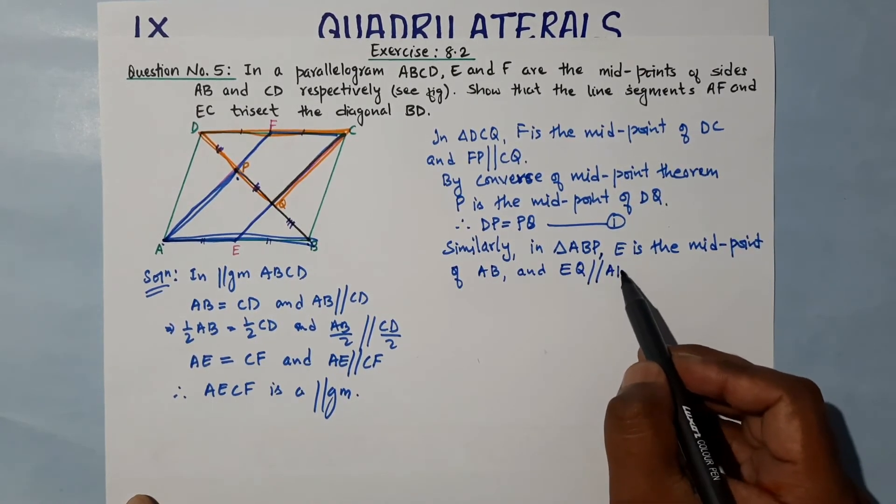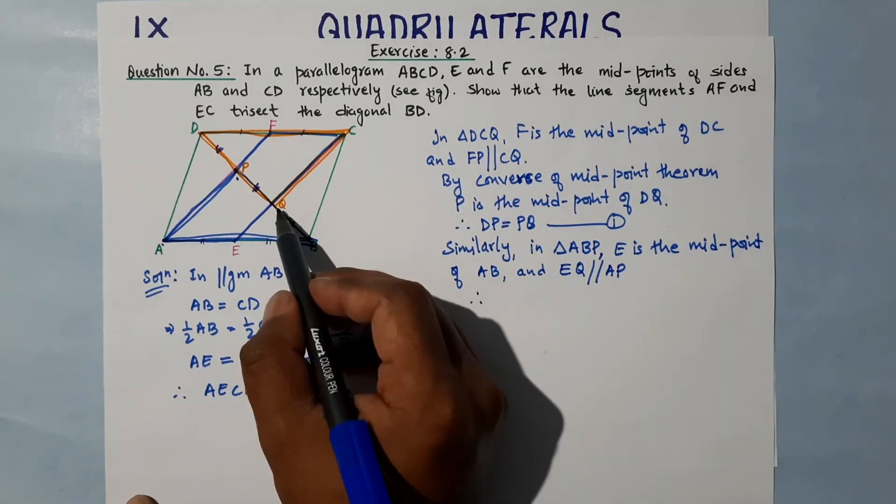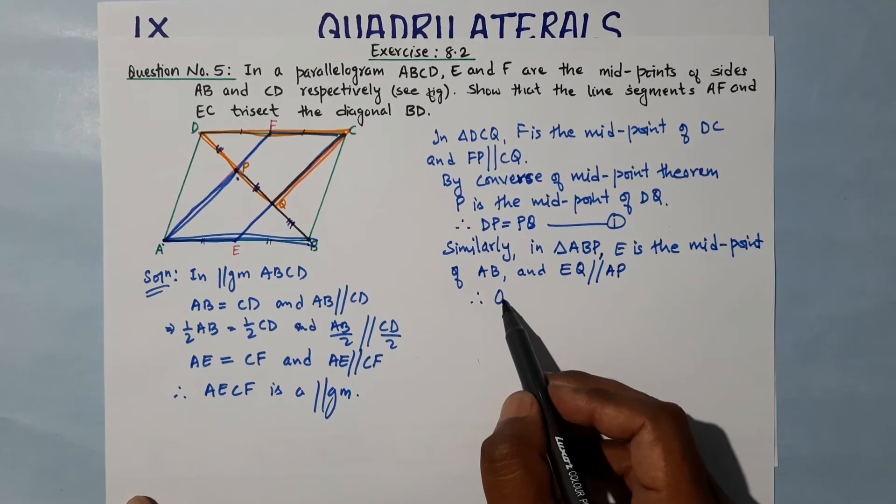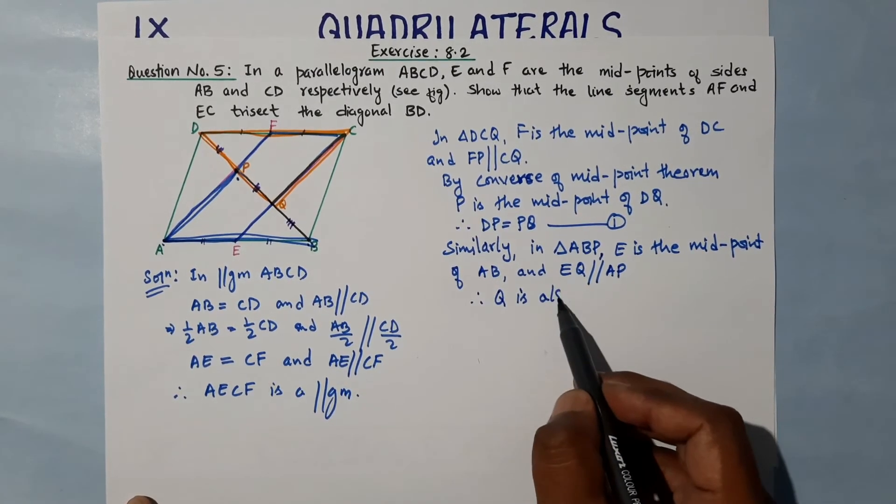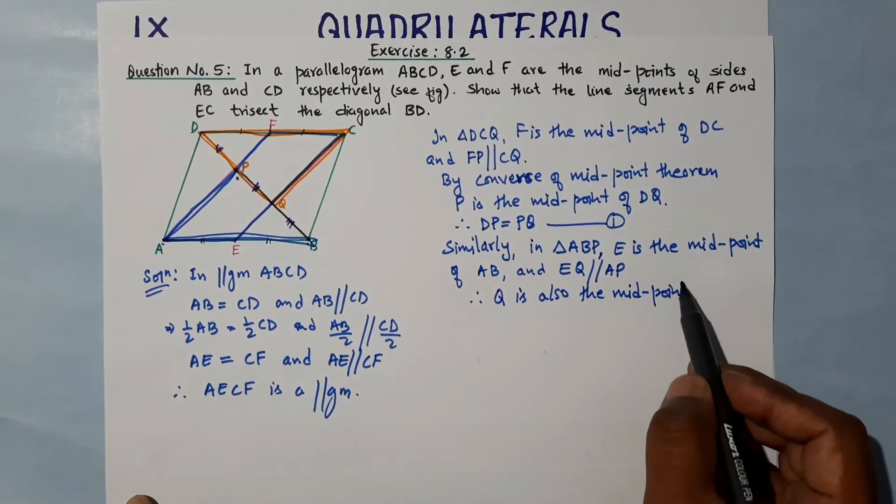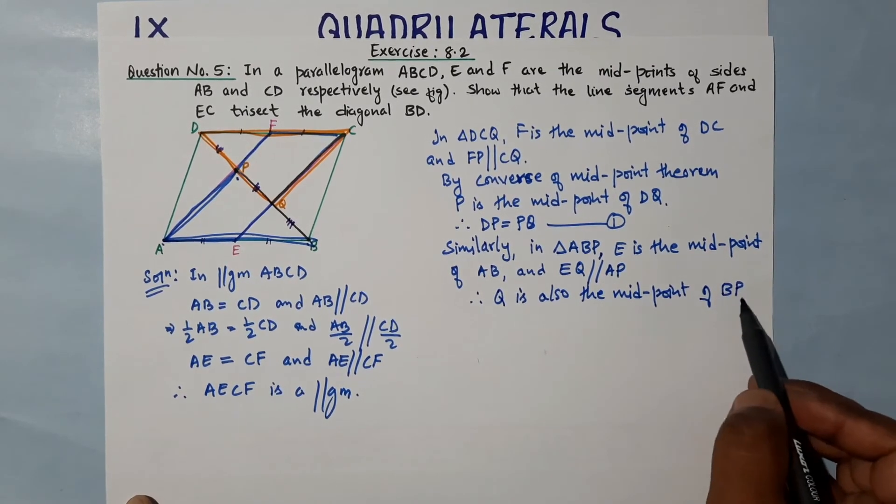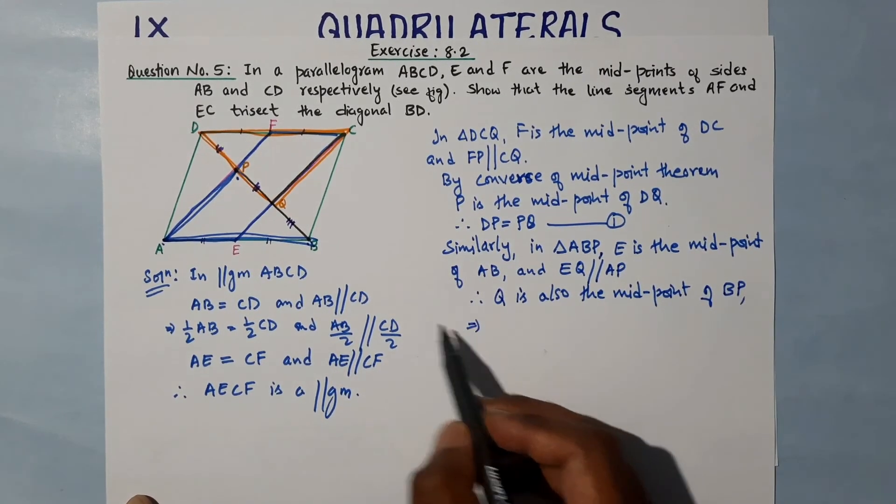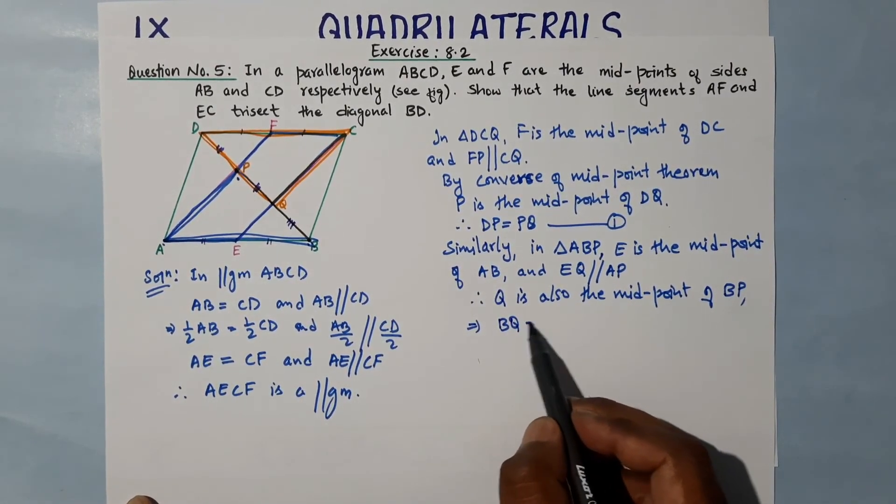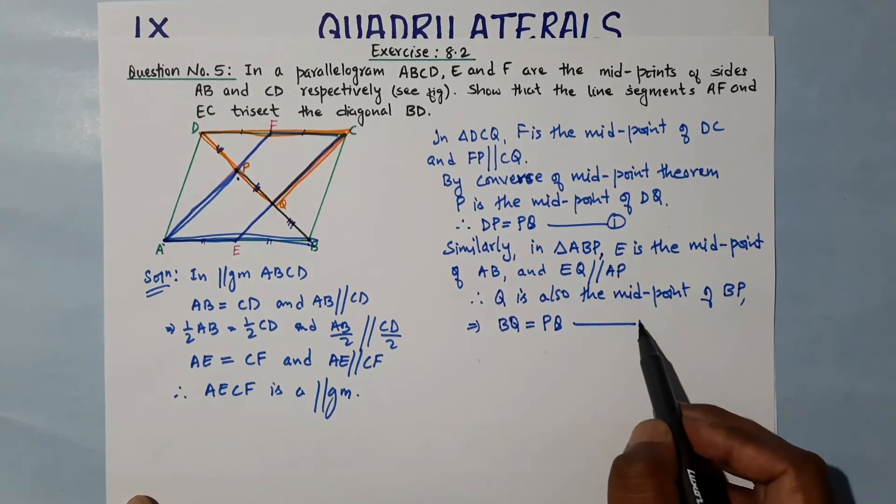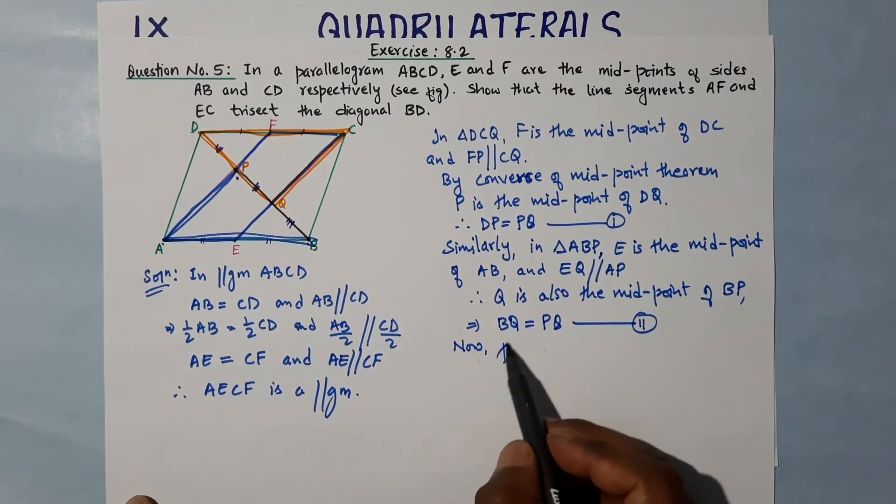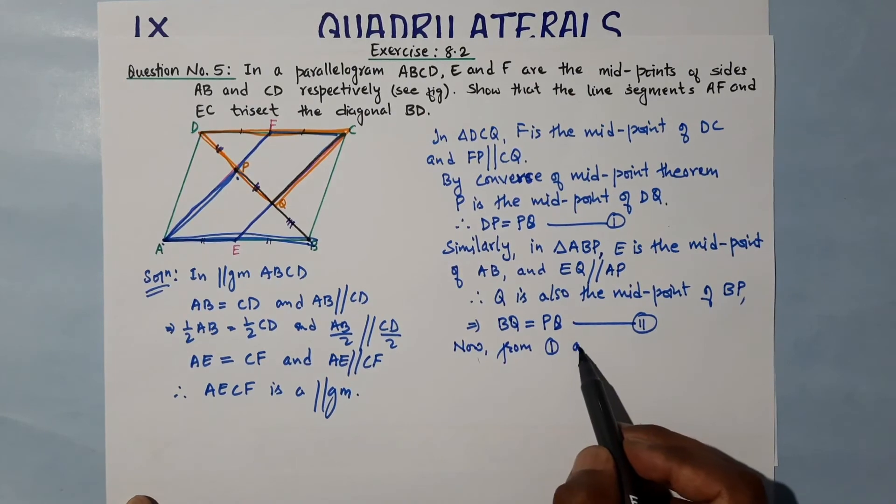...and EQ is parallel to AB. Therefore, Q is also the midpoint of DP by the converse of midpoint theorem. Therefore, Q is also the midpoint of DP. This implies BQ is equal to PQ - this is equation 2.